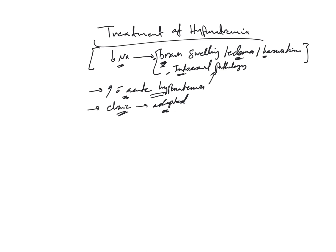With chronic hyponatremia, the risk of developing severe symptoms is less because the cells are given time to adapt to the swelling. On the other hand, when you correct acute hyponatremia quickly, the cells swell up quickly and shrink back quickly — no problem. But with chronic hyponatremia, because the cells are adapted, quickly correcting it will lead to sudden shrinkage and risk of osmotic demyelination syndrome.